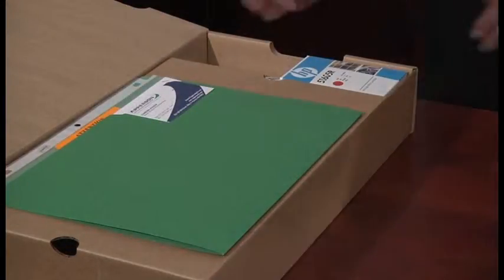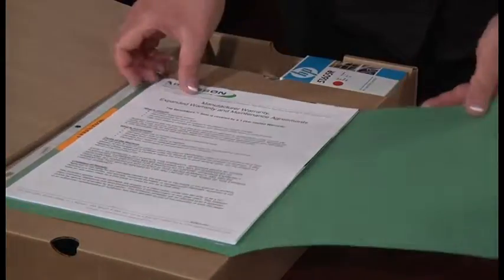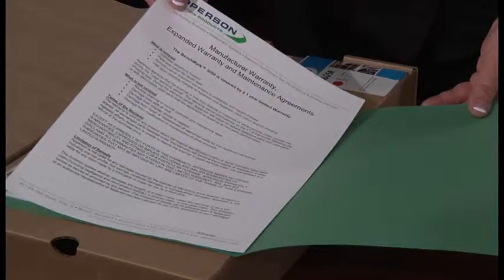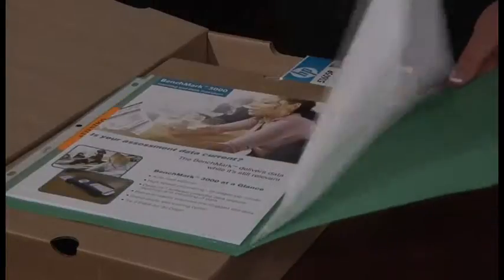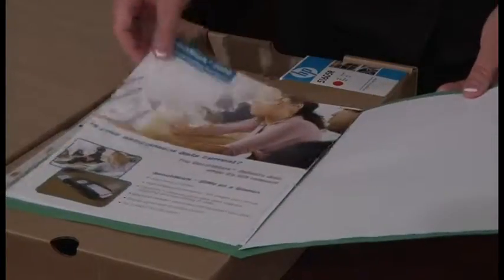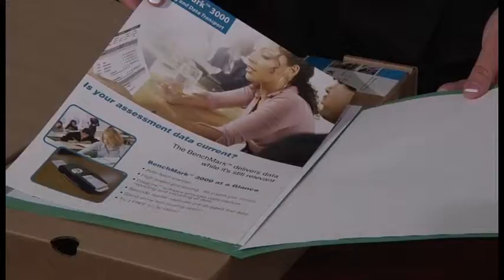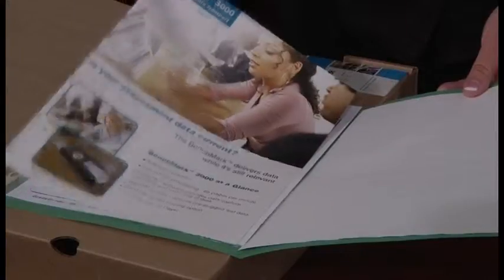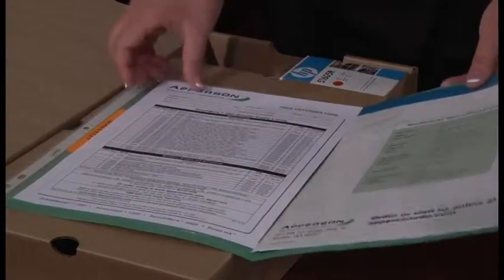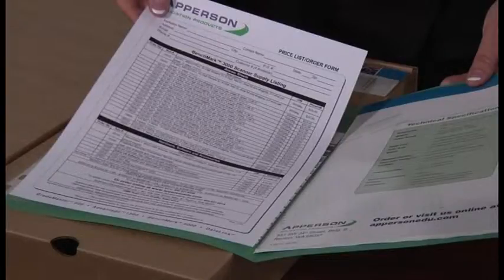When you open the folder you will find the warranty and maintenance agreement for the scanner. Please read this over and keep for future reference. Behind that you will find the Benchmark 3000 information sheet. This will cover the various options for forms to be used with the new scanner. Behind the informational brochure is a price list and order form for the scanner supplies. Price lists will be helpful when reordering test scoring forms for your benchmark scanner.